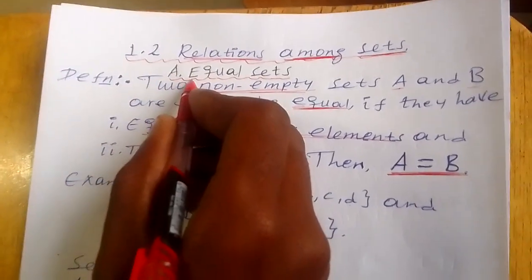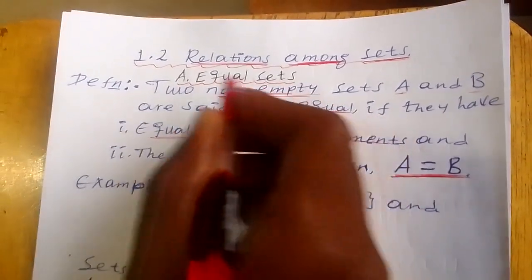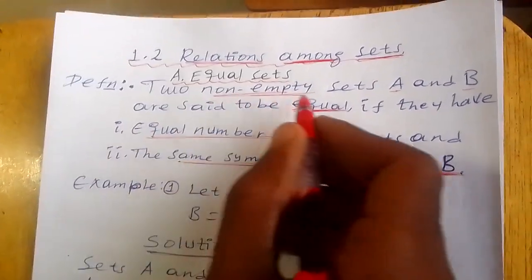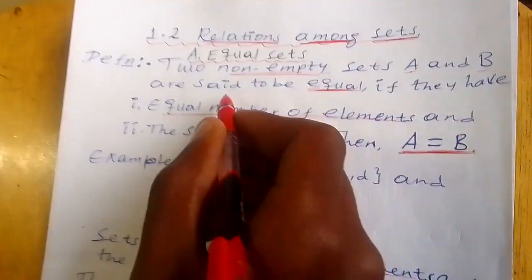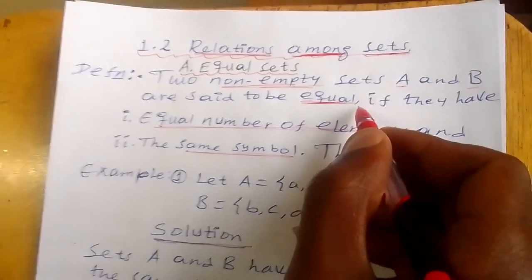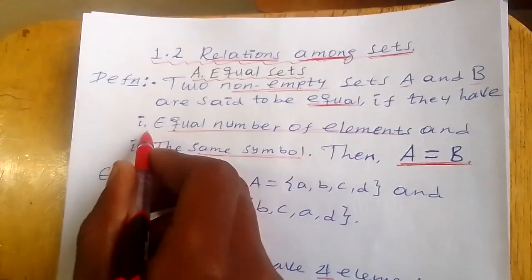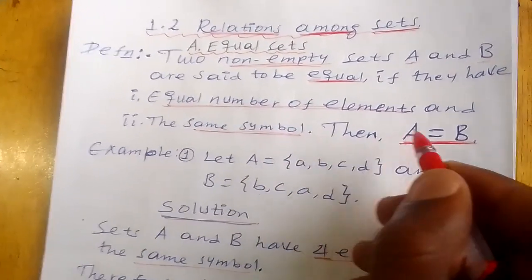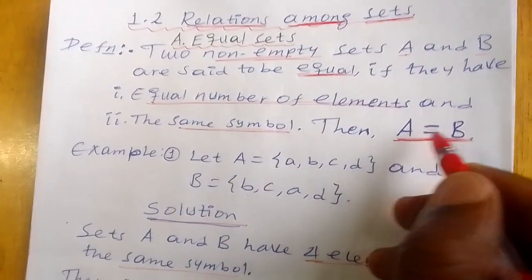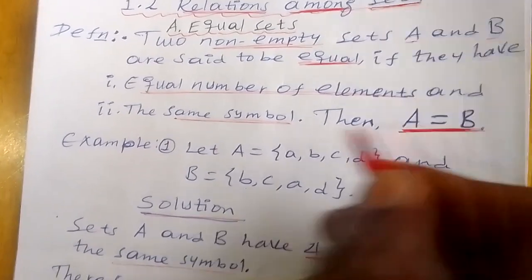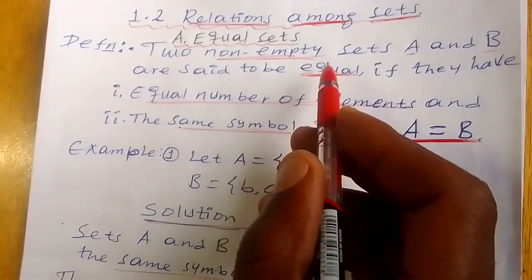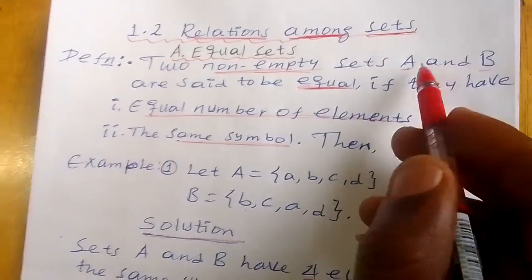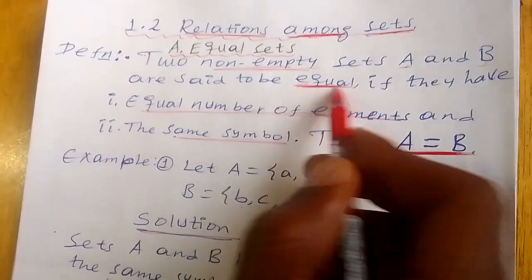The first topic is A: Equal Sets. Definition: Two non-empty sets A and B are said to be equal if they have an equal number of elements and the same elements. Then we say that A and B are equal sets.